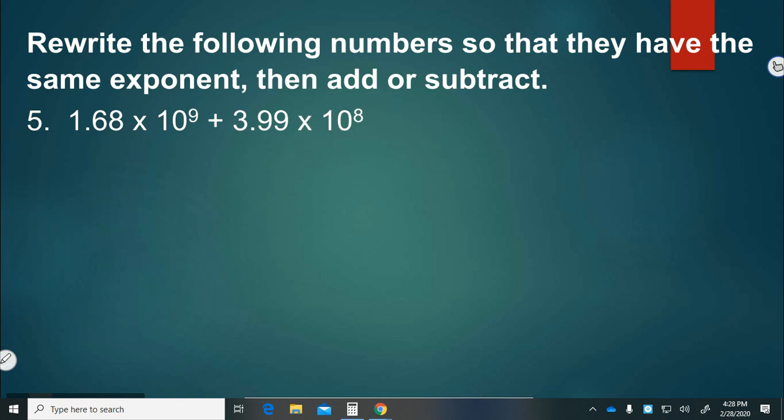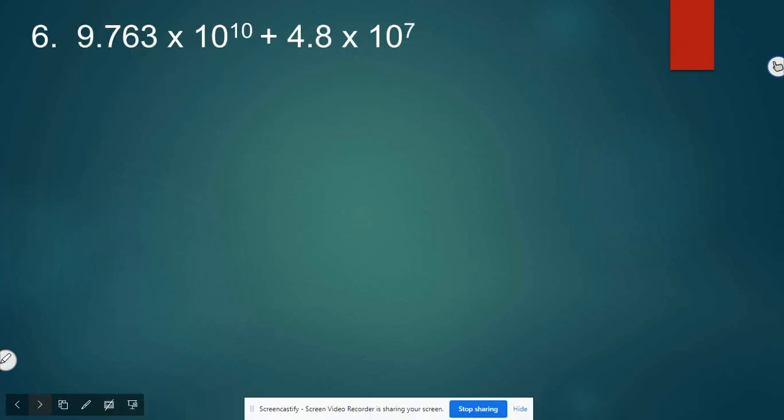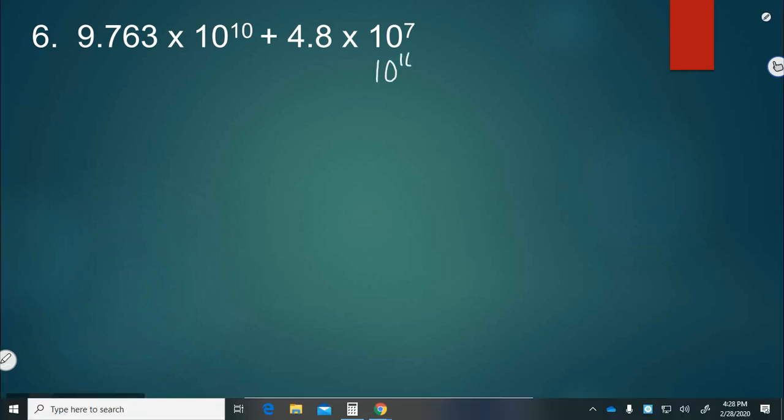All right. Let's try another. Number 6. Again, we want to change the smaller of the power of 10. So 10 to the 7th, we're going to change to 10 to the 10th. That means we're adding three place values. So we need to move back three place values, which is 0.0048 times 10 to the third.